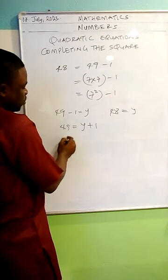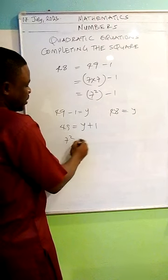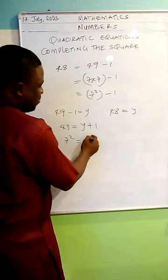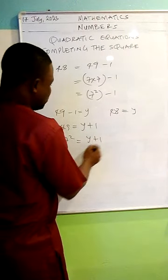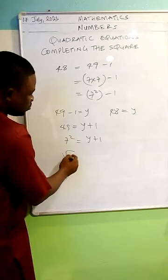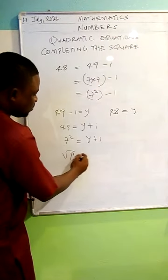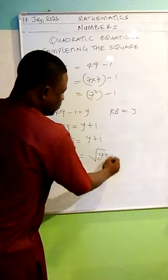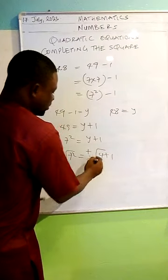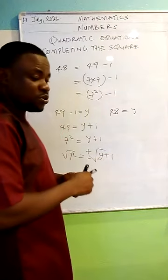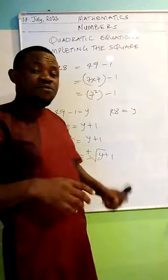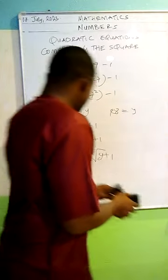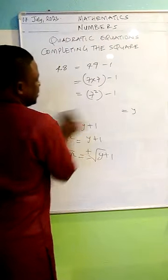Then I can have 49 become 7 squared, and then I have y plus 1. Then I'll look for the square root of 7 squared, and then I'll look for the square root of y plus 1. It's very important for you to know that the square root of every constant number is going to give you a plus or minus.